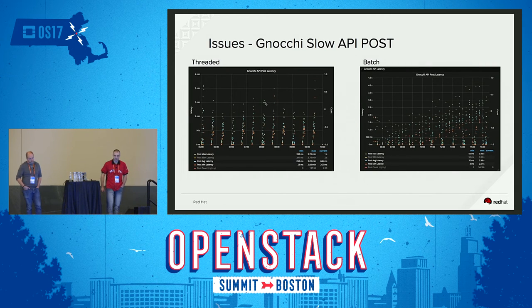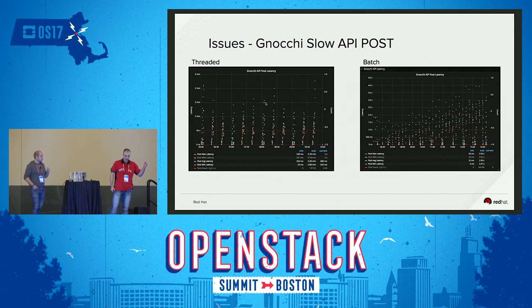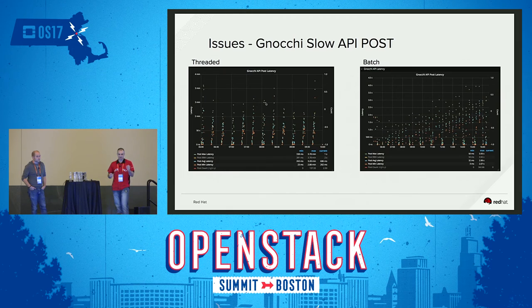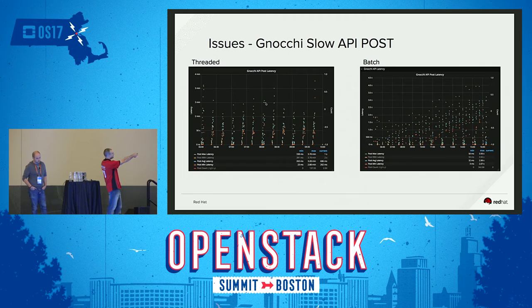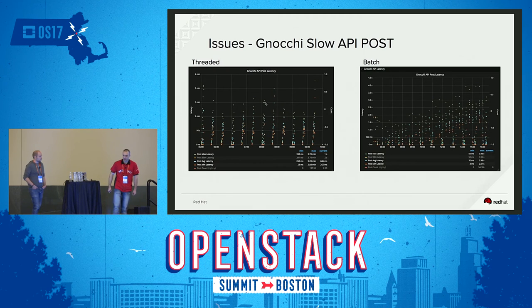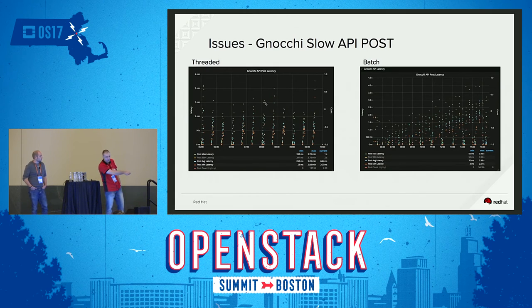Here's the slow API graph. The original threaded implementation would receive new data posted into the Gnocchi API, split it amongst threads based on CPU count, and each thread would append a key into an OMAP object in Ceph — that turned out to be total haywire. You can see on the axes it was taking minutes. I highlighted the max, average, and minimum latency to show the spread. After putting in a patch for batching, the latency was reduced down to seconds — this graph doesn't even go above 4.5 seconds.